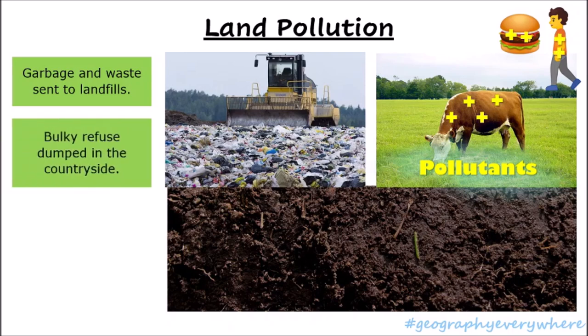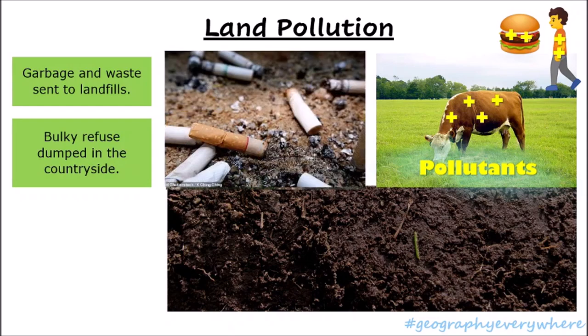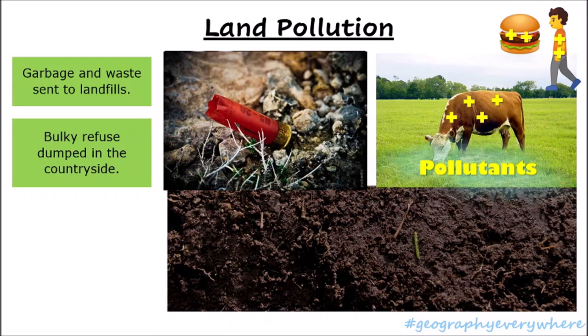Refuse dumped in the countryside has a similar effect. Appliances such as fridges, dishwashers, mattresses, cigarettes, pellets and remains from hunting have chemicals that leach into the soil and eventually might be passed on to plants, animals and the food that we eat.